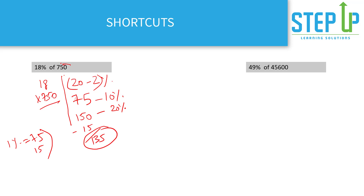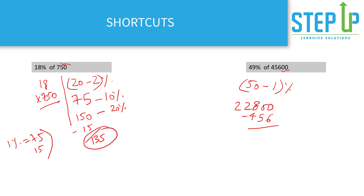Instead of doing a direct calculation, be smart and use a different approach to save time. For example, 49 percent of 45600: express as 50 minus 1 percent. 50 percent is 1 by 2 of 45600, which is 22800. 1 percent moves the decimal two places, giving 456. So 22800 minus 456 equals 22344. You can do this orally without multiplying by 49.